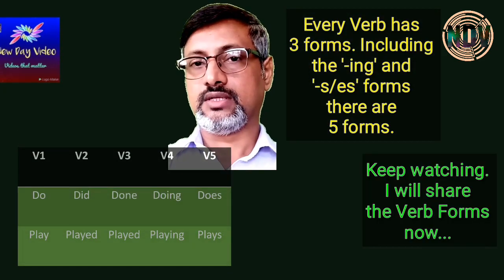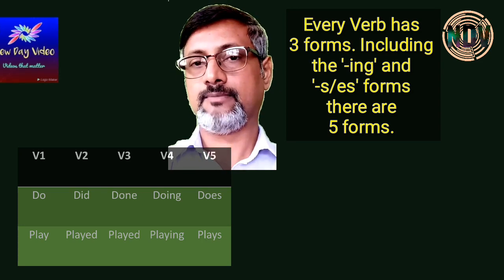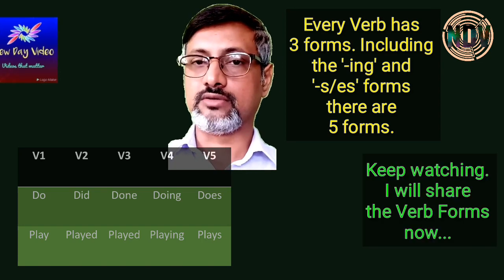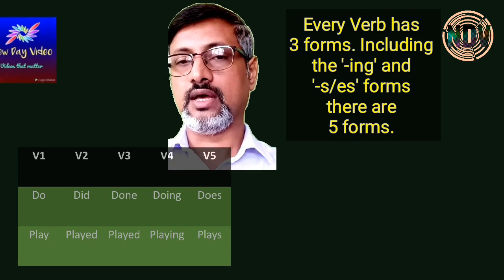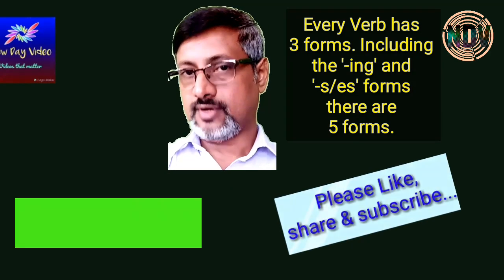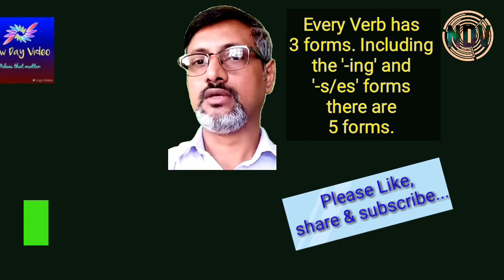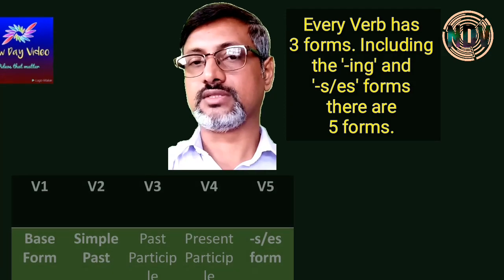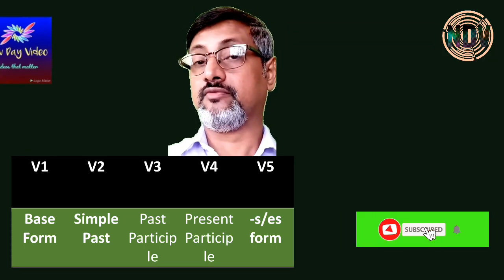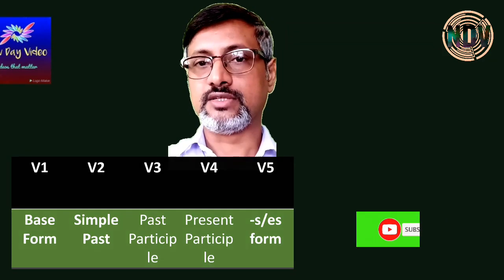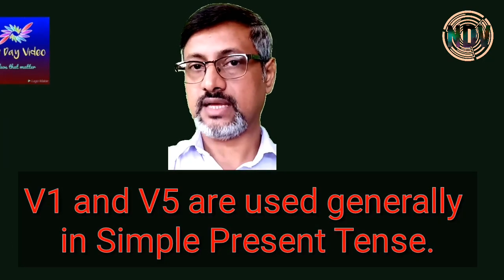Every verb has three forms. Some grammar books will tell you there are five forms if you count the -ing form and the -s or -es form. The first form is the root form, V1. V2 is the simple past form. V3 is the past participle form. V4 is the -ing form. And V5 is the root form plus -s or -es.